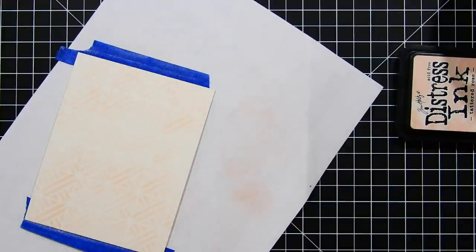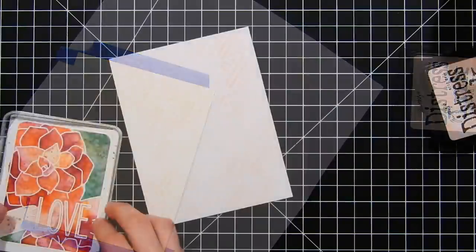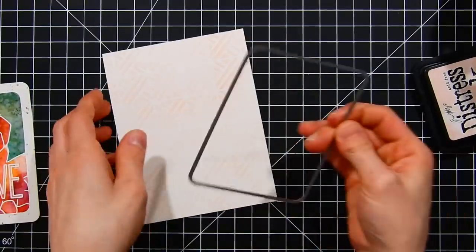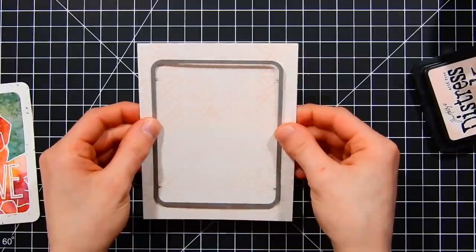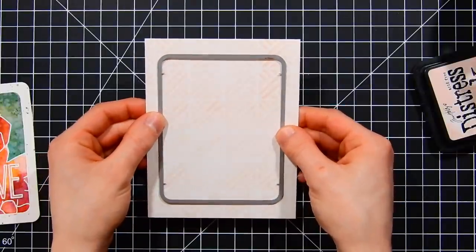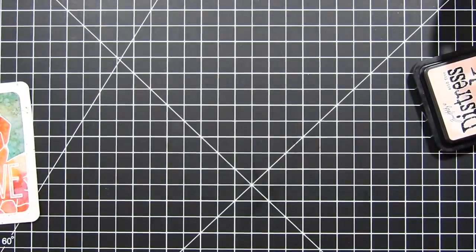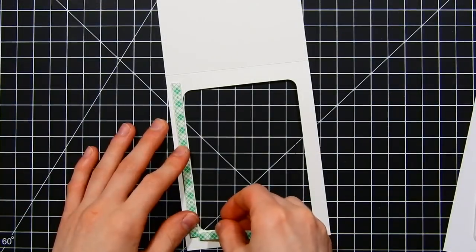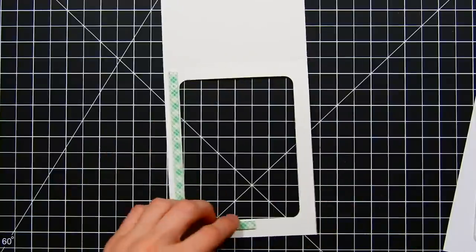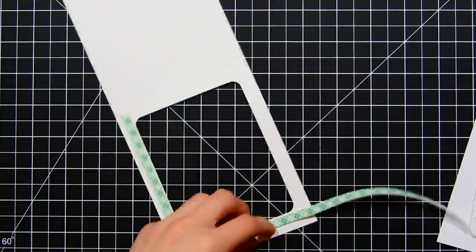I'm going to keep applying this over top of the stencil until I have it completely covered. Then I'll remove the stencil and you can see that gorgeous soft pattern that we have in the background. Because I was trying to get the feel of the card to have a little bit more of a variegated look, I allowed some areas to have darker colors than others. I'm going to die cut this card base using the same frame die that we used to die cut our watercolor panel.